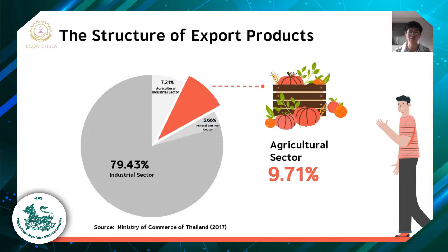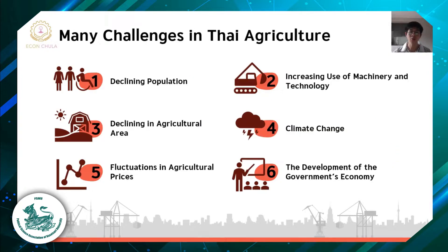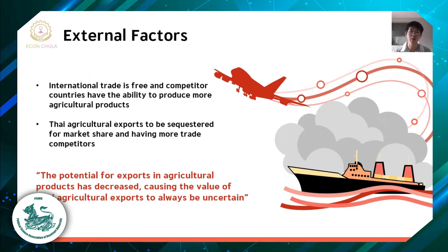At present, the Thai agriculture sector faces many challenges, including declining population and agricultural area, increasing use of machinery and technology, climate change, fluctuation in agriculture prices, as well as the development of government economies. Moreover, Thai agriculture faces challenges from external factors. International trade is increasingly free and competitor countries have the ability to produce more agriculture products, causing Thai agriculture to compete for market share and face more trade competitors, resulting in the value of Thai agriculture exports being always uncertain.